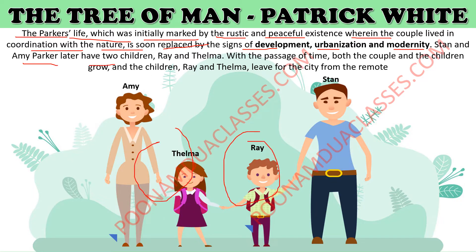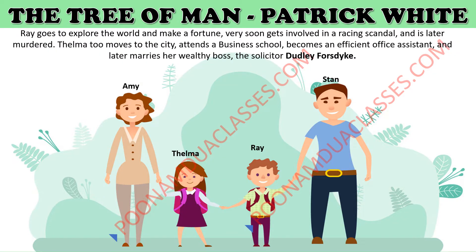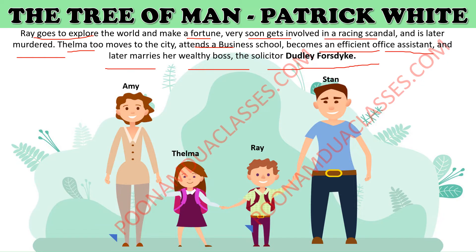With the passage of time, both the couple and the children grow, and the children Ray and Thelma leave for the city from their remote home. Ray explores the whole world and creates a fortune, but very soon gets involved in a racial scandal and is later murdered. Thelma also moves to the city, attends a business school, becomes an efficient office assistant, and later marries her wealthy boss, the solicitor Dudley Forstike.